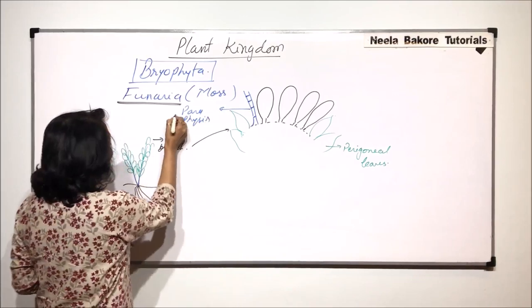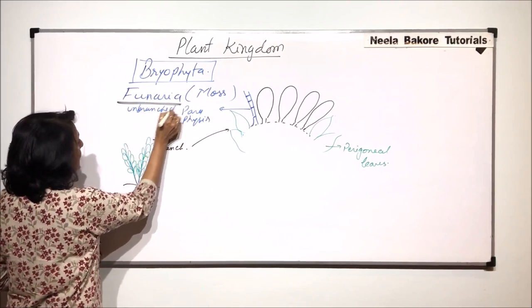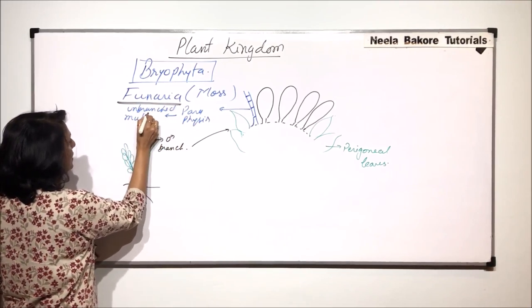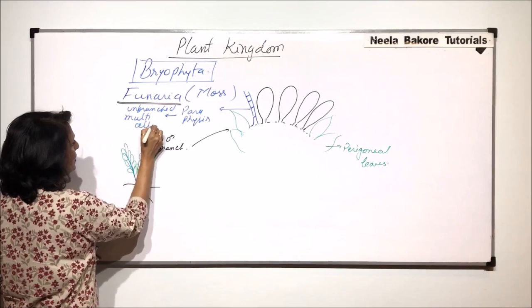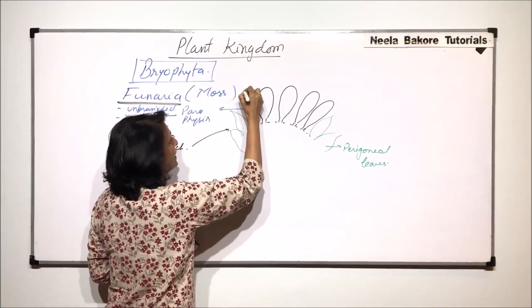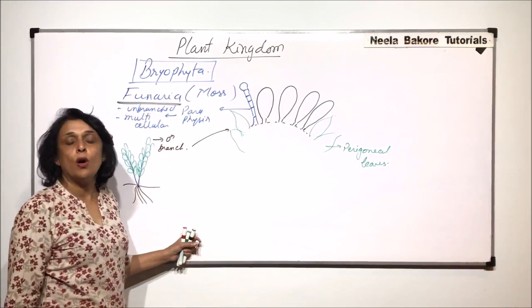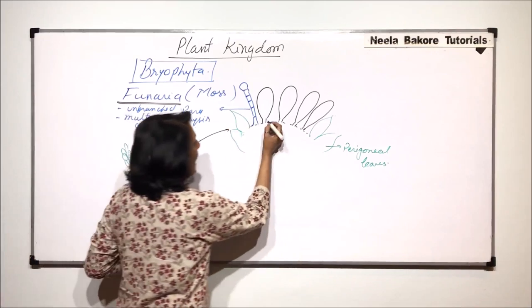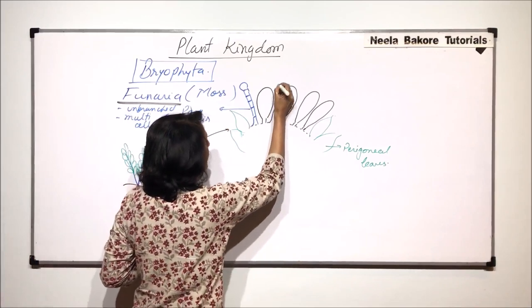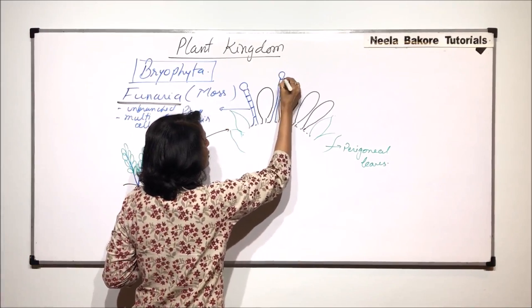These paraphysis are unbranched, multicellular, and their tips are swollen. That means the cell which is present at the tip is swollen. All of the cells are elongated, and these are in between these antheridia. We would find many such paraphysis.